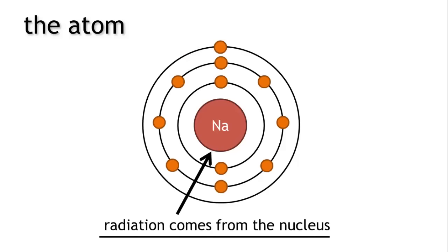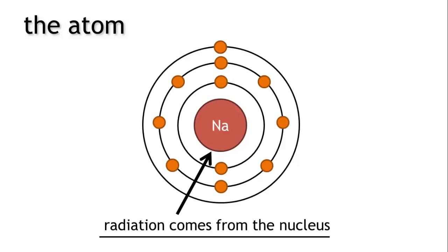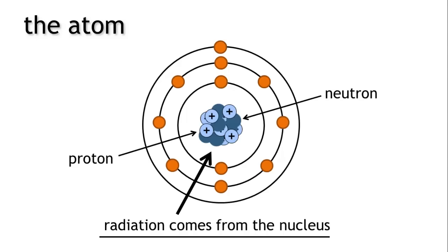Radiation comes from part of the atom called the nucleus. The nucleus is made up of neutrons and protons and it's the center of the atom.